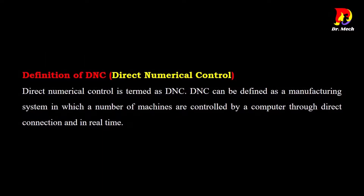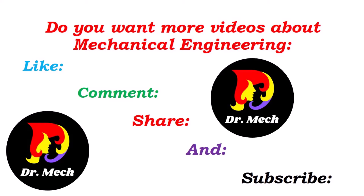Definition of DNC — Direct Numerical Control. Direct Numerical Control is termed as DNC. DNC can be defined as a manufacturing system in which a number of machines are controlled by a computer through direct connection and in real time.